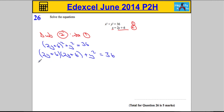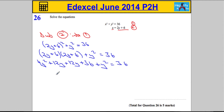Let's expand the brackets. We get 2y times 2y is 4y squared, 2y times 6 is 12y, 6 times 2y is 12y, and then 6 times 6 is 36. We still have the y squared and it's still equal to 36. Let's collect our terms together and tidy up — we get 5y squared plus 24y, and then 36 subtract 36 is going to equal 0.